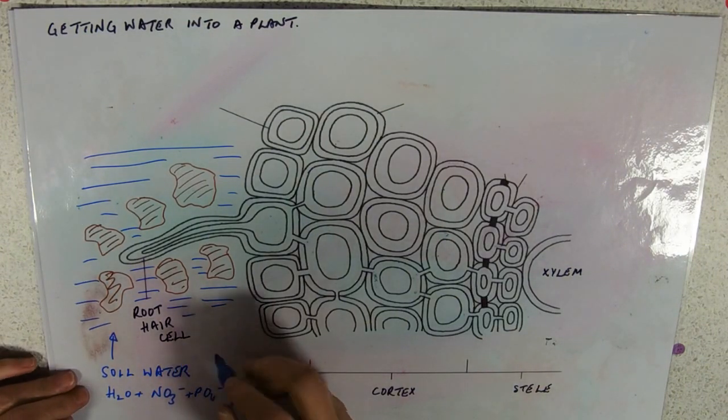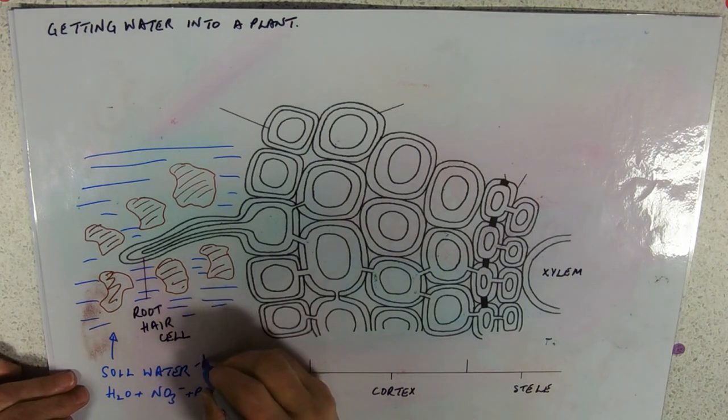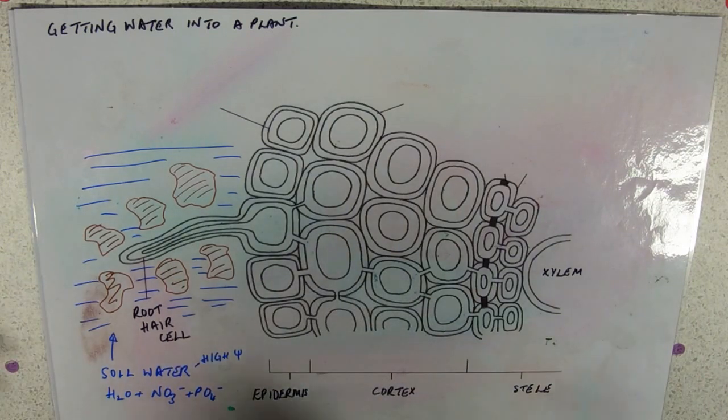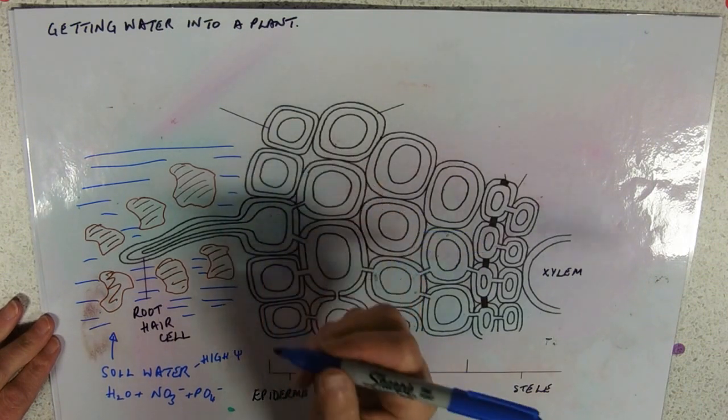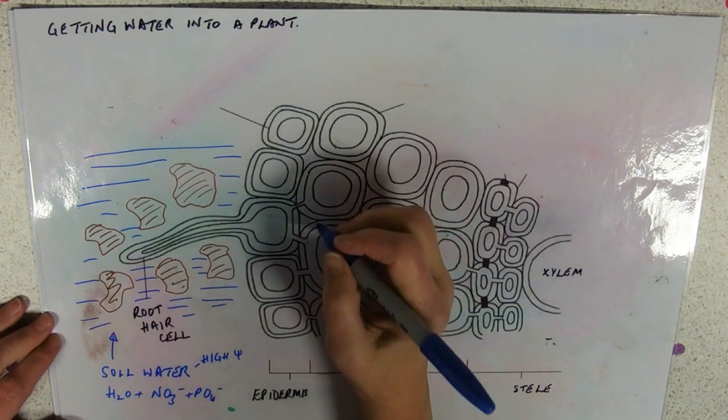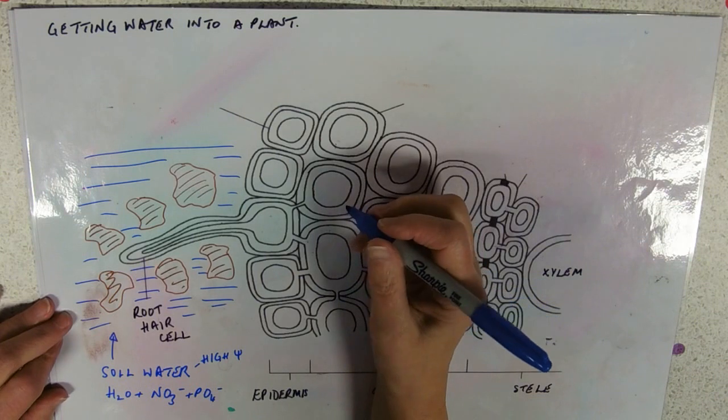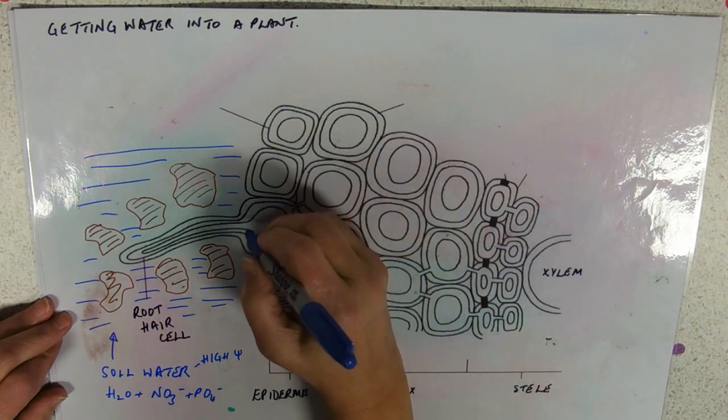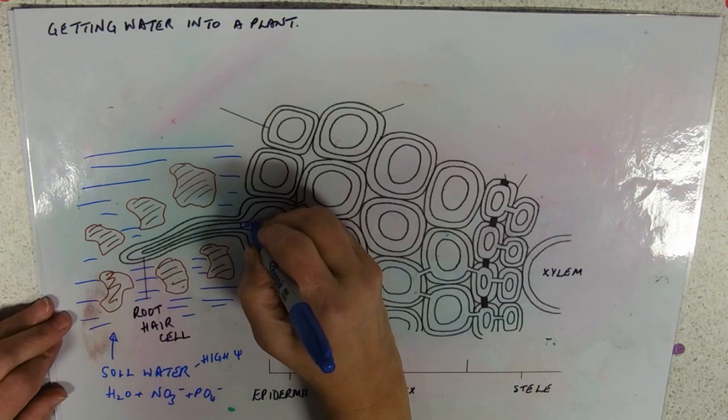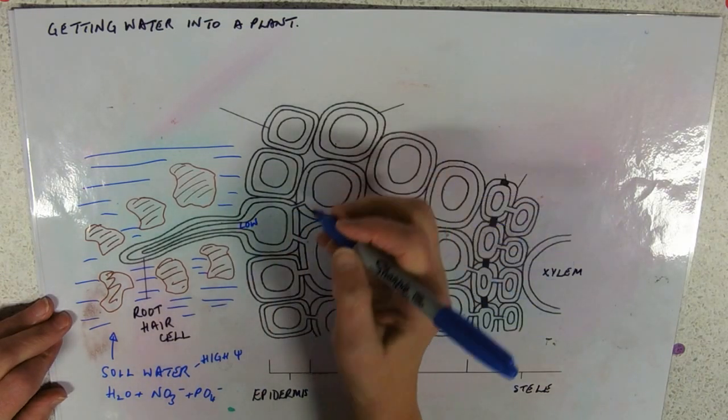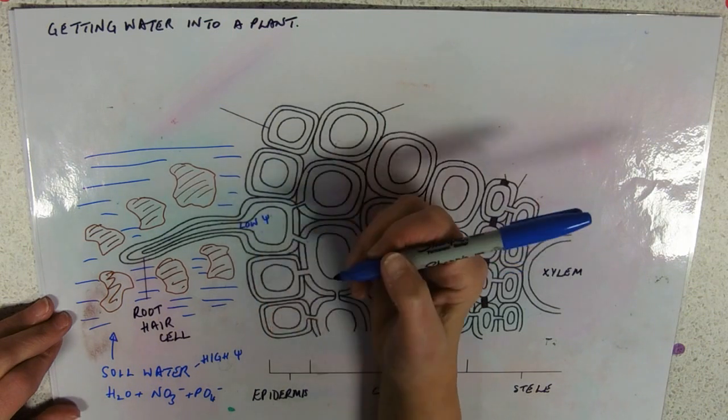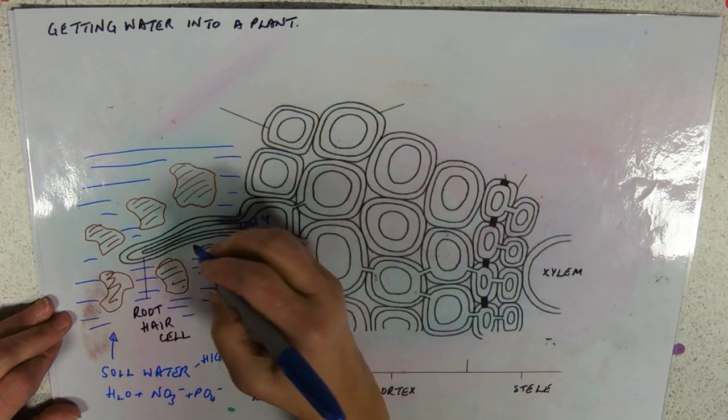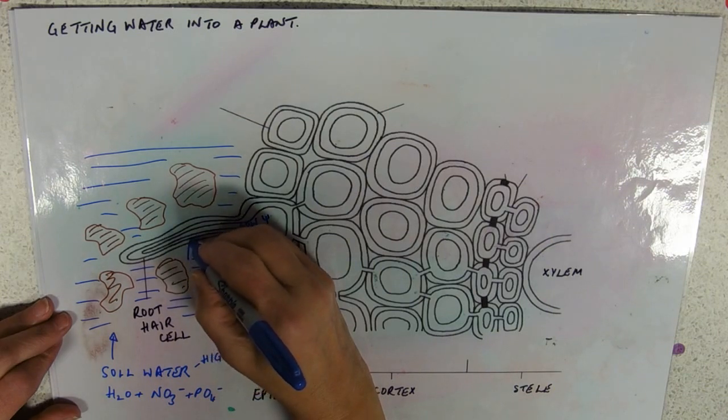And of course it's mostly water so it has a very high water potential. Hey, guess what I'm going to talk about now? Osmosis! So the cell that you know from GCSE, one of your specialized cells, is a root hair cell, and a root hair cell has a higher concentration of minerals and other stuff and a low water potential. So root hair cells which give a big surface area.